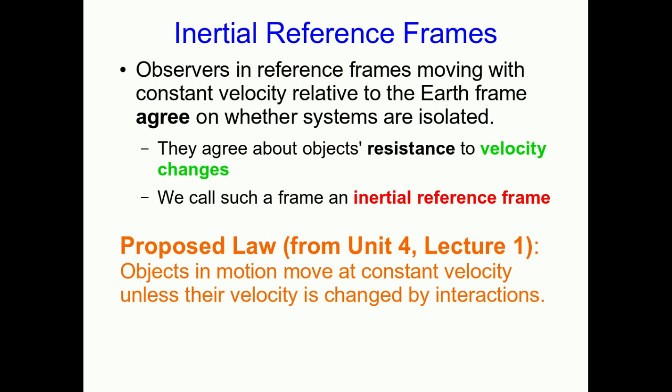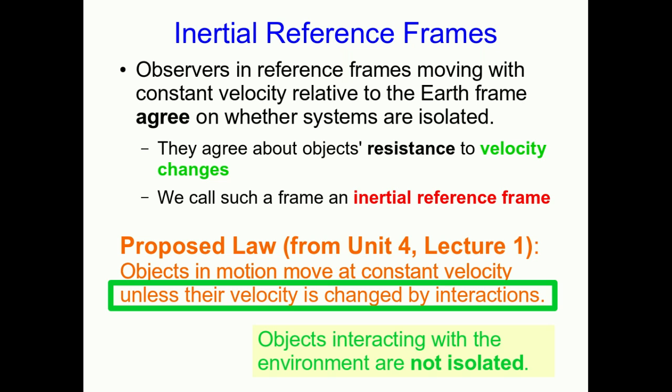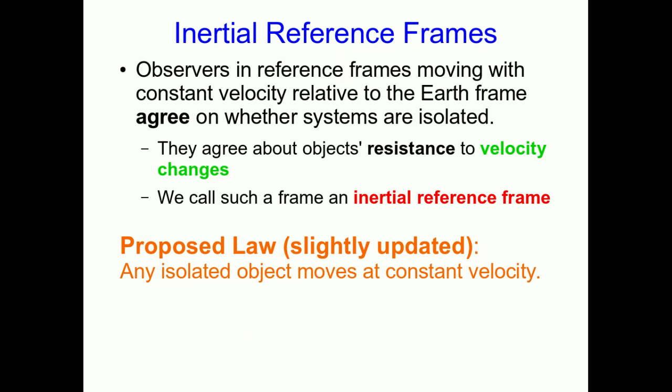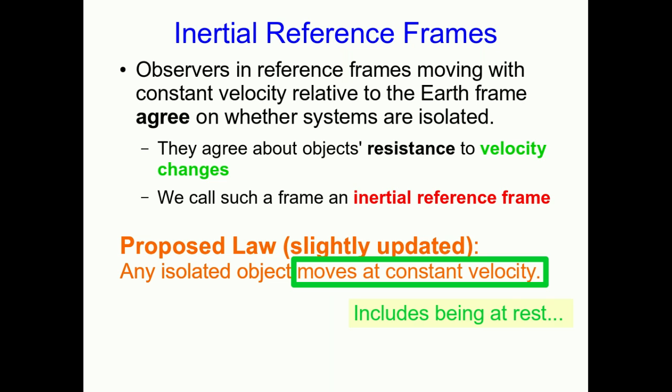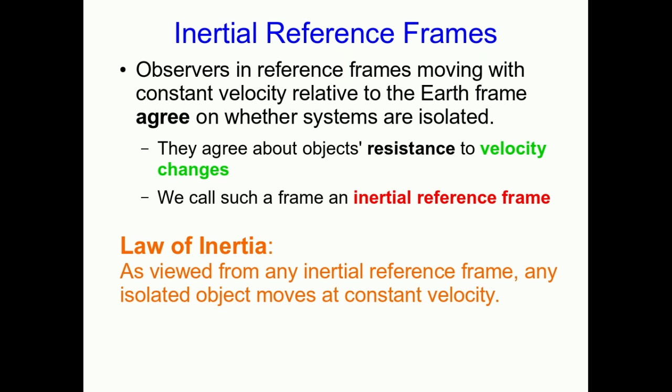Now I'm going to pull out the law from a few lectures back and improve it. We said that objects in motion move at constant velocity unless their velocity is changed by interactions. We can improve that: anything interacting with its environment is not isolated, so we can simply say that any isolated object moves at constant velocity — and moving at constant velocity includes being at rest, which is just a special case. We can make this even more powerful: as viewed from any inertial reference frame, any isolated object moves at constant velocity. This is as general and absolute a law as we know of in physics.